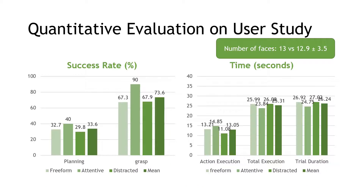Finally, we computed quantitative metrics on the user study data. In general, we noticed that when users were distracted, the success rates of planning and grasp were lower, but execution time was similar. For the face counting task, the average number of faces counted by users was 12.9 with a standard deviation of 3.48.